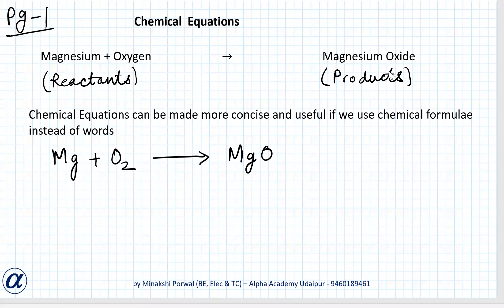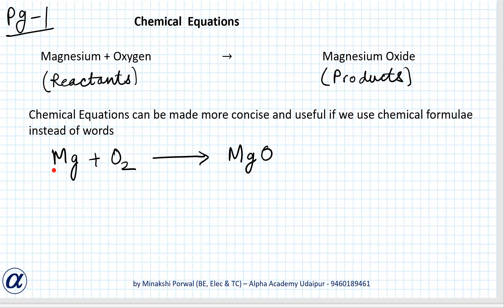Magnesium plus oxygen gives magnesium oxide. Here magnesium and oxygen are reactants and magnesium oxide is the product. A chemical equation is a concise and useful way of representing a chemical reaction. Magnesium is represented by symbol Mg, oxygen gas is always represented as O2 molecule. When they combine, it gives MgO, magnesium oxide.